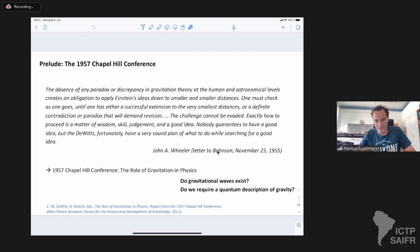So here's my first contribution. We heard a lot about the famous Chapel Hill Conference already from 1957. I would like to contribute a little anecdote how the Chapel Hill Conference came into life. And here I quote from a letter that John Wheeler wrote back then in order to get funding for the Chapel Hill Conference. And this is really beautiful. So he says the absence of any paradox or discrepancy in gravitation theory at the human and astronomical levels creates an obligation to apply Einstein's ideas down to smaller and smaller distances. One must check as one goes until one has either a successful extension to the very smallest distances or a definite contradiction or paradox that will demand revision. The challenge cannot be evaded. Exactly how to proceed is a matter of wisdom, skill, judgment, and a good idea.